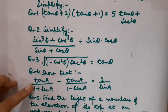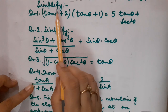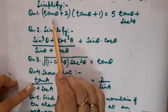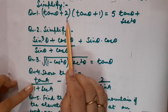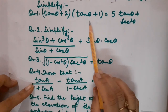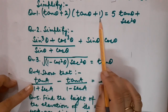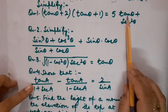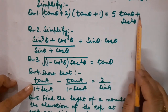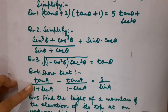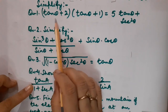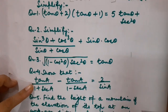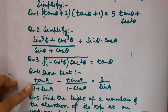So children, our first question is from basic trigonometry: simplify (tan θ + 2)(tan θ + 1) and determine whether it is equal to 5tan θ + sec²θ. We have to prove whether the left hand side is equal to the right hand side or not.